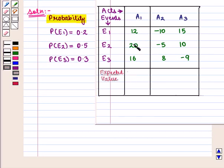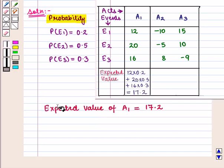12 into 0.2 plus 20 into 0.5 plus 16 into 0.3. On solving this we will get 17.2. So expected value of act A1 is equal to 17.2.